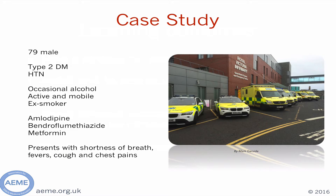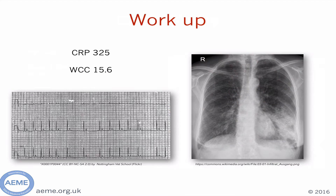Our case study is a 79-year-old man with a background of diabetes and hypertension, referred to A&E by his GP with shortness of breath, fevers, a cough, and some chest pains. As you can see from his initial investigations, he has raised inflammatory markers, left basal consolidation on his chest X-ray, and his ECG shows that he is in atrial fibrillation.